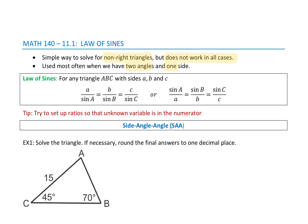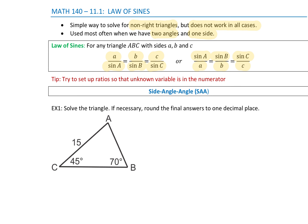We use Law of Sines most often when we have two angles and one side. For any triangle, the relationship is: side A over sine of angle A equals side B over sine of B, which equals side C over sine of C. If you're trying to solve for a side, put the side on top. If you're trying to find an angle, flip it: sine of A over side A equals sine of B over side B equals sine of C over side C. Always set up your ratios so the unknown variable is in the numerator.